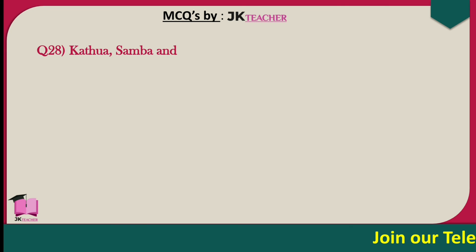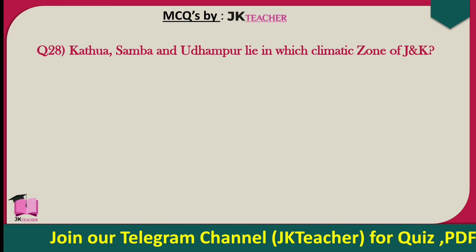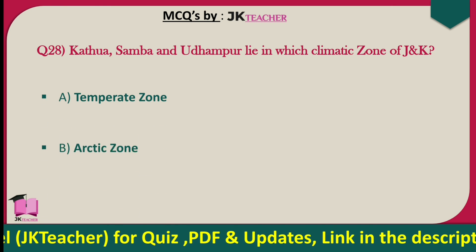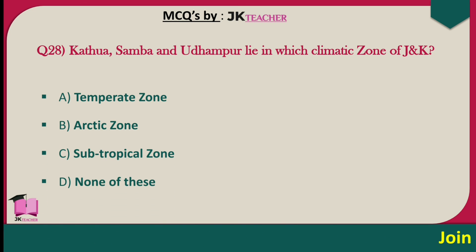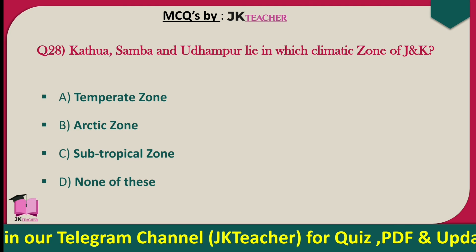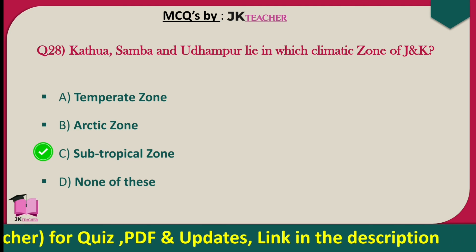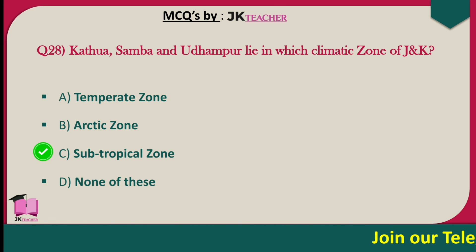Kathua, Samba, and Udampur lie in which climatic zone of J&K? Options are Temperate zone, Arctic zone, Subtropical zone, and none of these. The right answer is option C — subtropical zone. In Kashmir, there are two zones: Temperate zone and Subtropical zone, and these three districts lie in the subtropical zone.